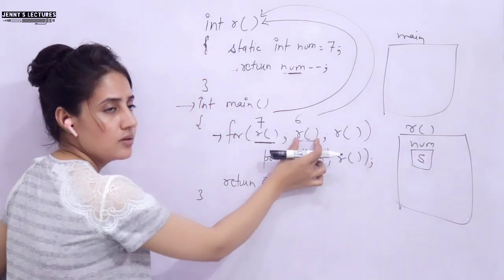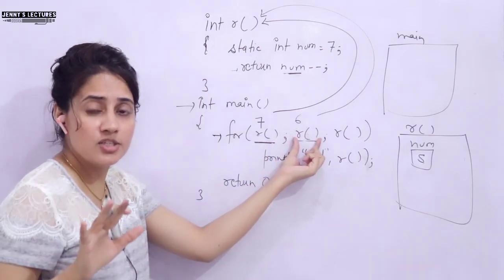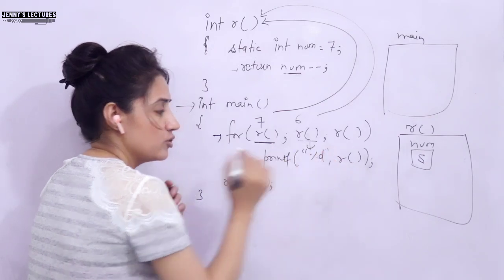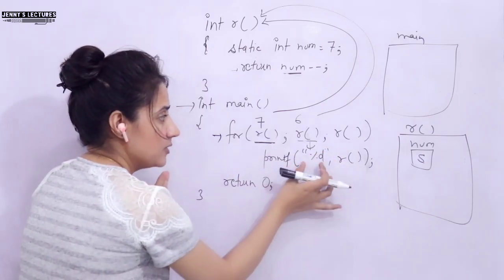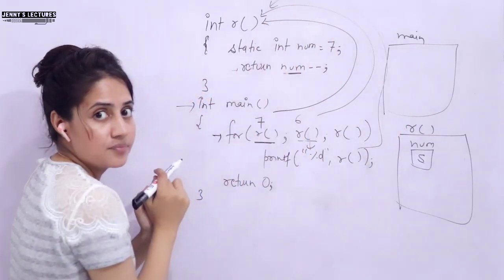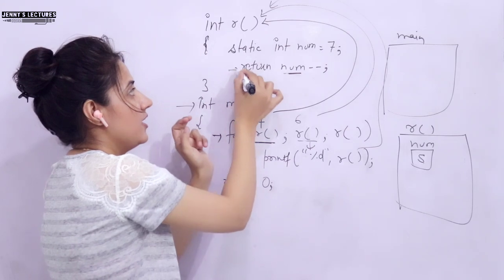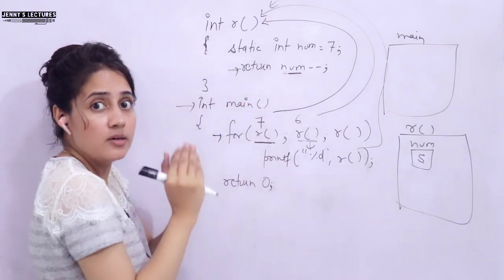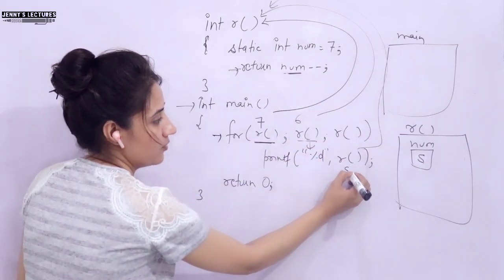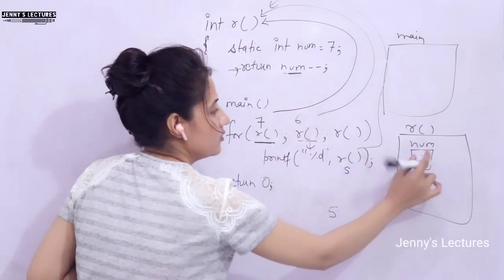Inside the for loop we have printf with %d, and we are again calling function r. Control goes to r, num holds its previous value of 5. return num-- returns the original value 5 and then num becomes 4. So 5 is printed here.